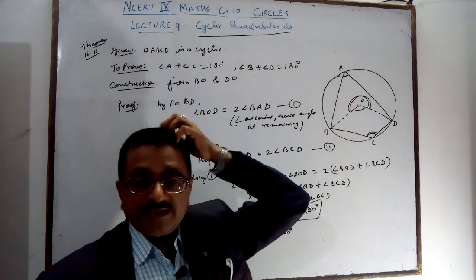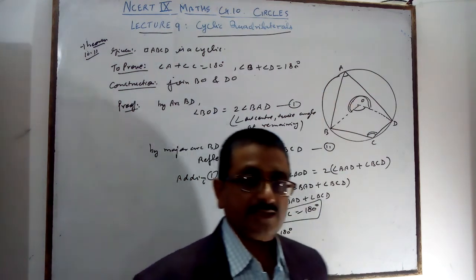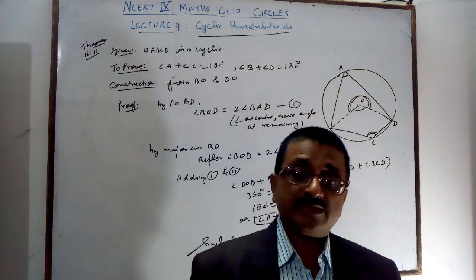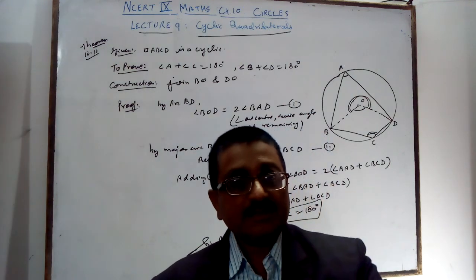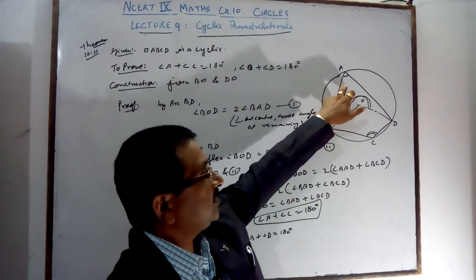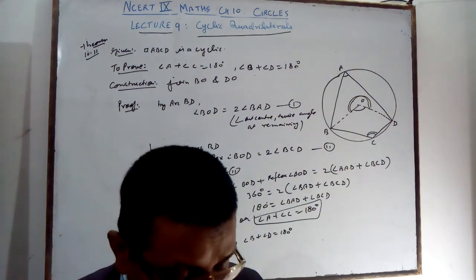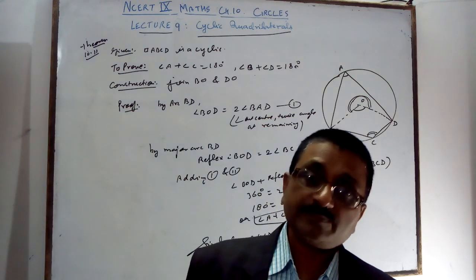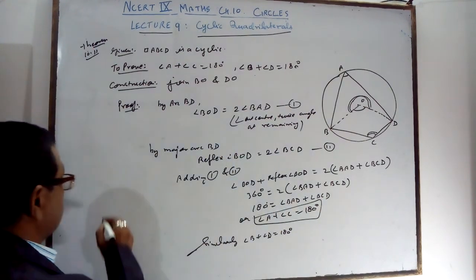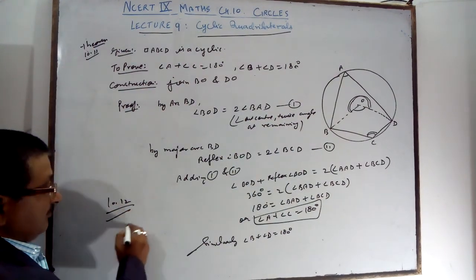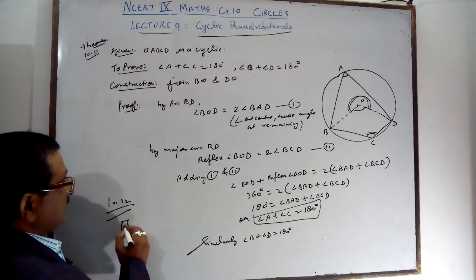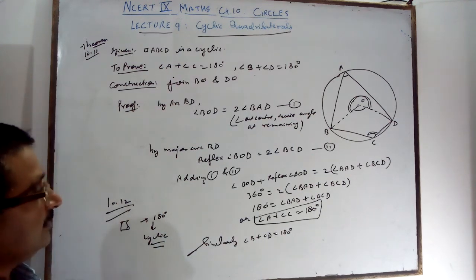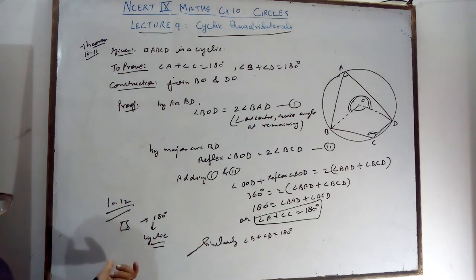The supplementary angle sum is 180, so you can check whether any quadrilateral is cyclic or not. A rectangle is always cyclic because its opposite angle sum is 180. A square is always cyclic because 90 plus 90 equals 180. Converse theorem: any quadrilateral whose opposite angle sum is 180 will be a cyclic quadrilateral. Theorem 10.12 states: if either pair of opposite angles of a quadrilateral is supplementary, then it is a cyclic quadrilateral. Rectangle and square are cyclic.